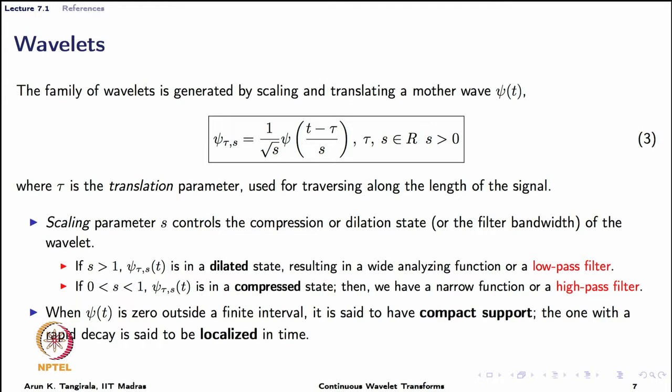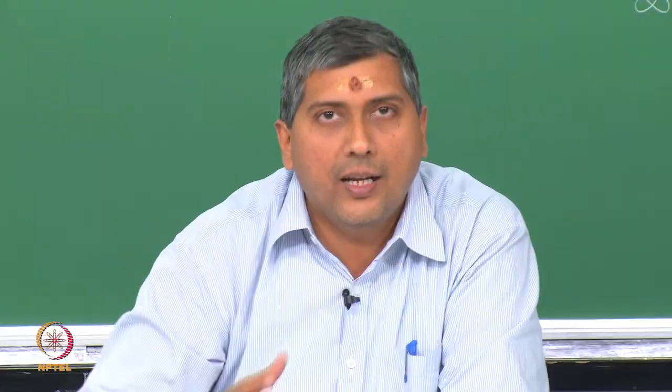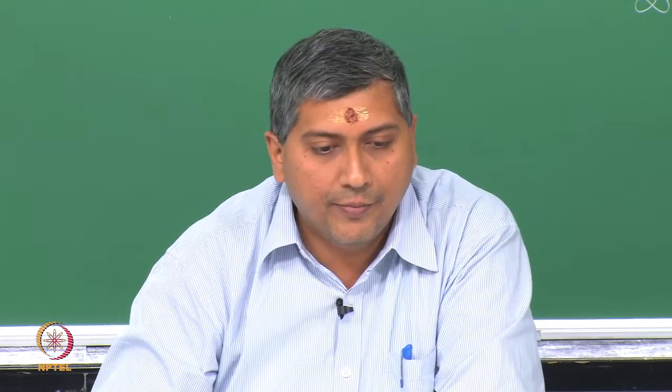Some terminology: when the mother wave or child is zero outside a finite interval, the wave is said to have compact support. When a function has rapid decay, we say it is localized in time — it does not have compact support, meaning it does not exactly go to zero in finite time.